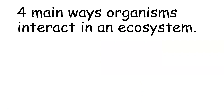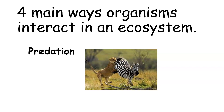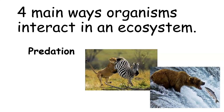The next way organisms interact is predation: one organism kills and eats another. Generally, predators are larger than their prey. In this picture, the lioness is the predator and the zebra is the prey. The predator wants to kill the prey as quickly as possible because as long as the zebra is alive, it can kick and bite and potentially harm or kill the lioness. Another example: a bear catching salmon — the bear is the predator, the salmon is the prey.